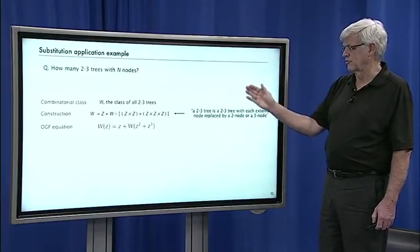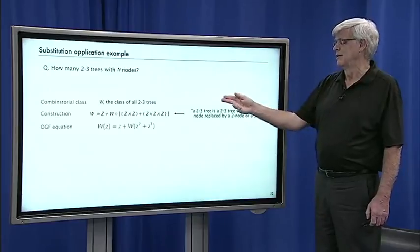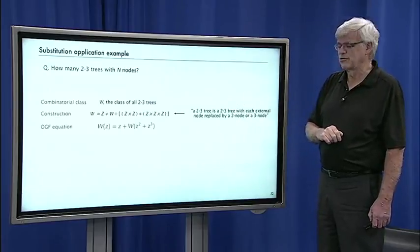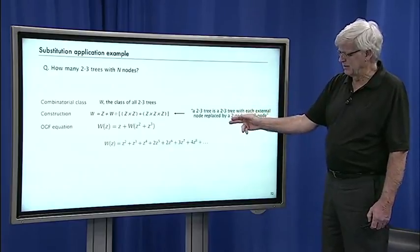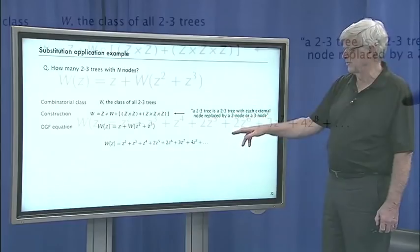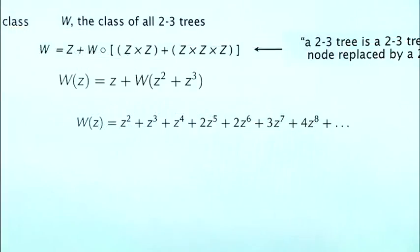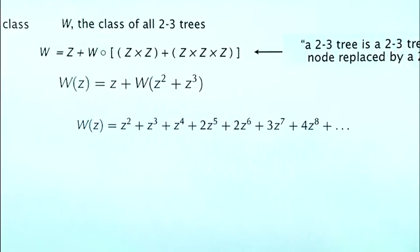That construction is a way to construct all two-three trees. You want to pick out the coefficient of z to the n to find the number of two-three trees with n nodes. But the combinatorial construction immediately gives that OGF equation. Now that's a more complicated kind of OGF equation than we've seen. We can check that it works. From the previous slide, here's the leading term of the generating function.